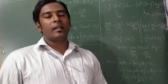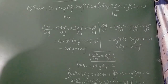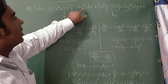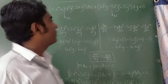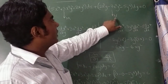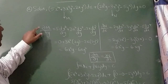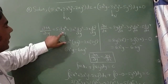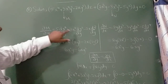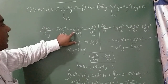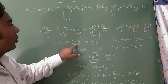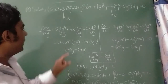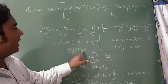Question 2: Solve (5x⁴ + 3x²y² - 2xy³) dx + ... dy = 0. M = 5x⁴ + 3x²y² - 2xy³ and N is the remaining expression. Differentiating M with respect to y: 5x⁴ gives 0, 3x² is constant so differentiating y² gives 2y, and -2x is constant so differentiating y³ gives 3y². This gives 6x²y - 6xy².